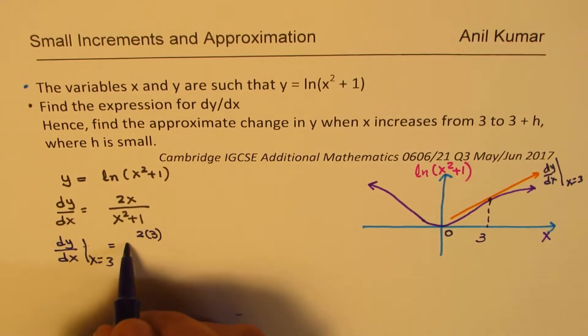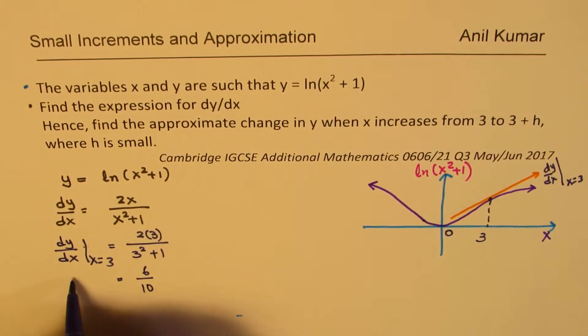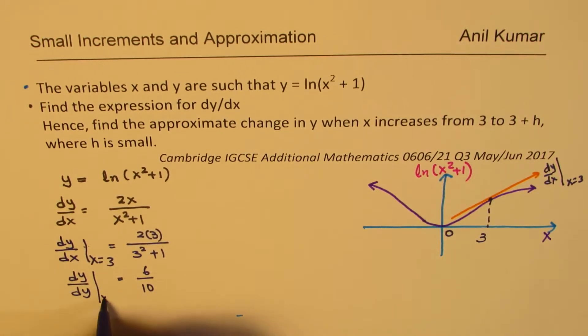What is dy/dx when x equals 3? So substitute 3 here. We get 2 times 3 over 3 square plus 1, and that gives you 6 over 10. This is the value of the derivative at x equals 3.